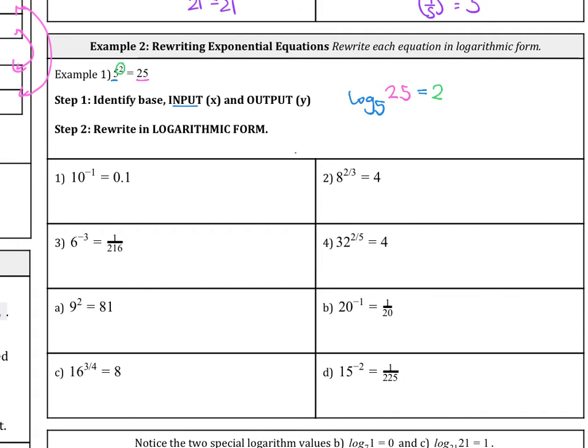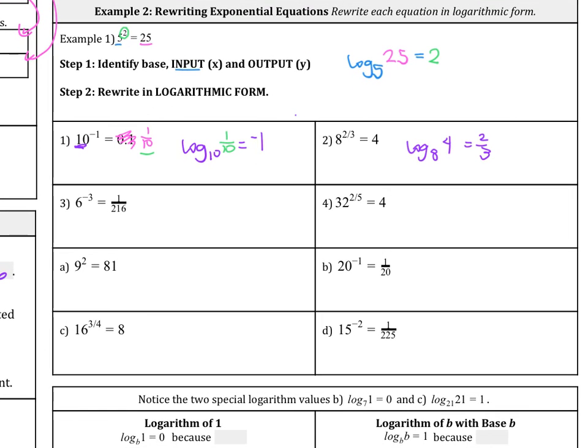So let's do number 1 together. 0.1. Let's rewrite that. That is really 1 over 10. So looking at that, let's see if we can rewrite this. Log, the base is this number here, which is 10, equals the exponent. So negative 1. And then this y value here goes in this place here, 1 over 10. We try one more to help us out. So 8 to the 2 thirds equals 4. So the base, log base 8. And then it equals the exponent of 2 thirds. And then the y value goes here, 4. So see if you can try the rest of these out.